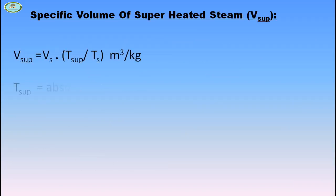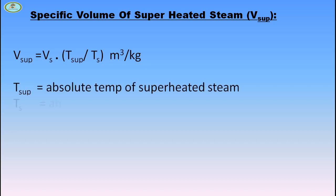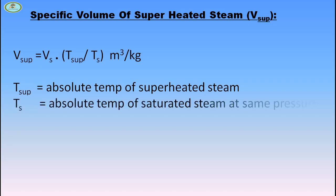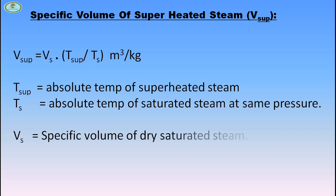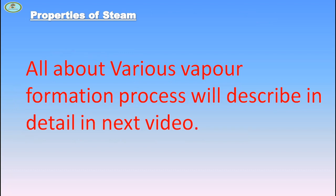The specific volume of superheated steam equals Vs × (T_sup / T_sat), where T_sup is the absolute temperature of superheated steam, T_sat is the absolute temperature of saturated steam at the same pressure, and Vs is the specific volume of dry saturated steam.